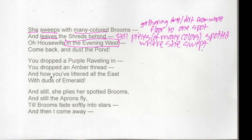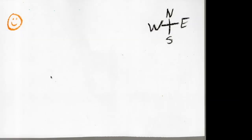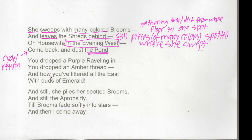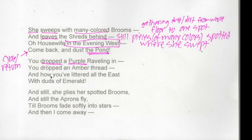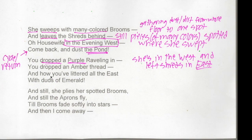Oh housewife in the evening West — those are important clues. The mention of West is interesting, and the evening gives us a clue as well. Here I've drawn north, south, east, and west, with my housewife in the west. Come back and dust the pond — this is significant for a couple of reasons: we have the idea of a cycle or a return. She's going away, apparently leaving things behind, but we want her to come back. I drew a pond at the bottom of my picture.